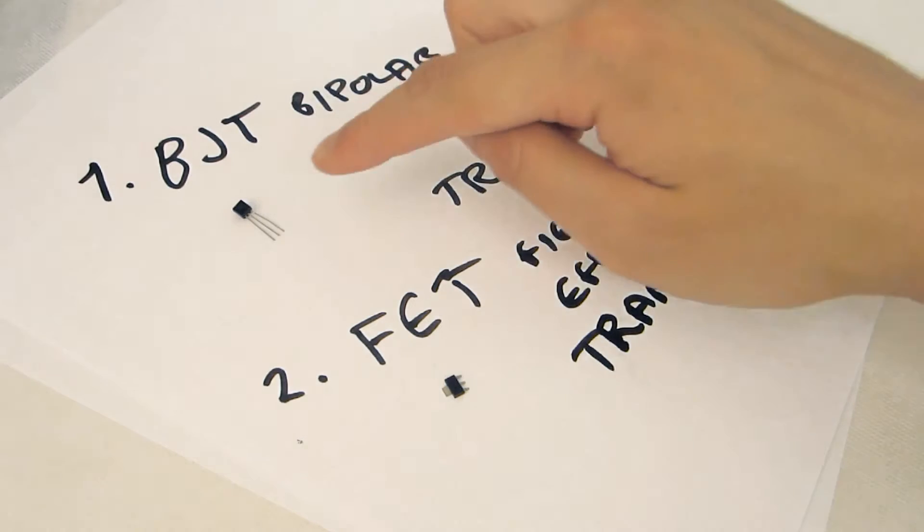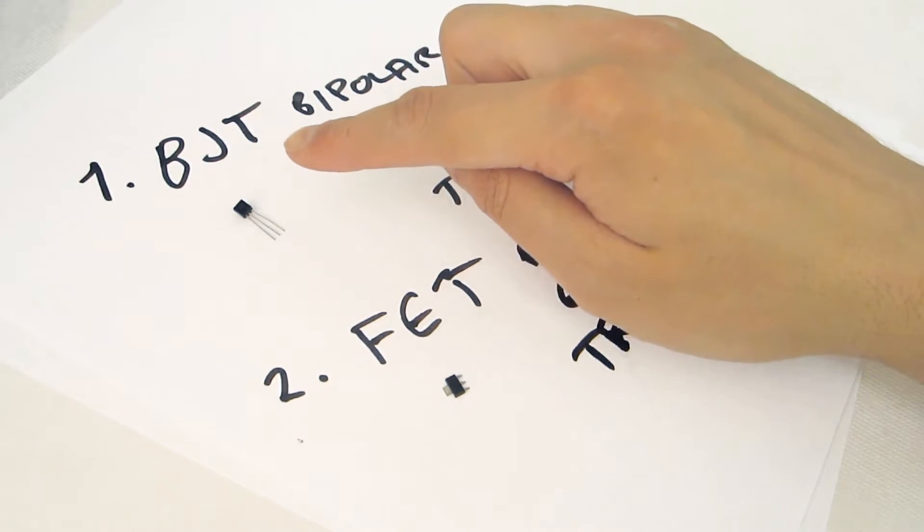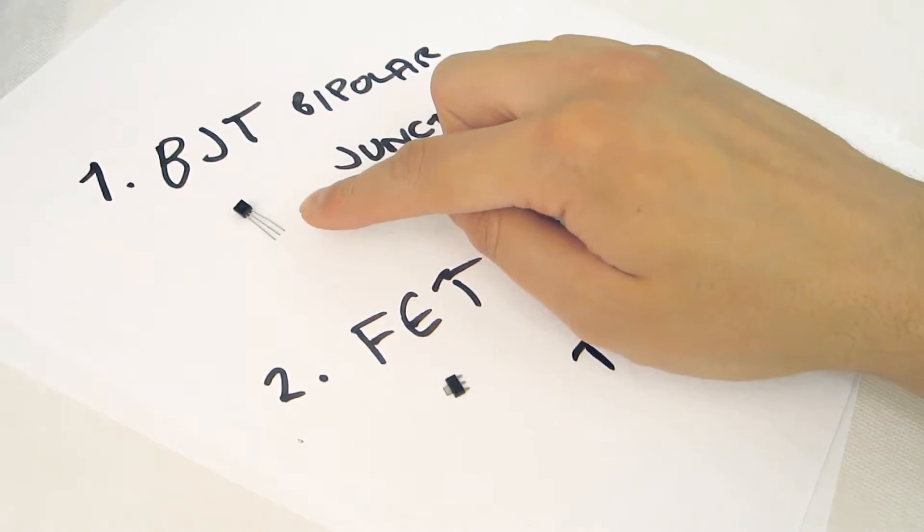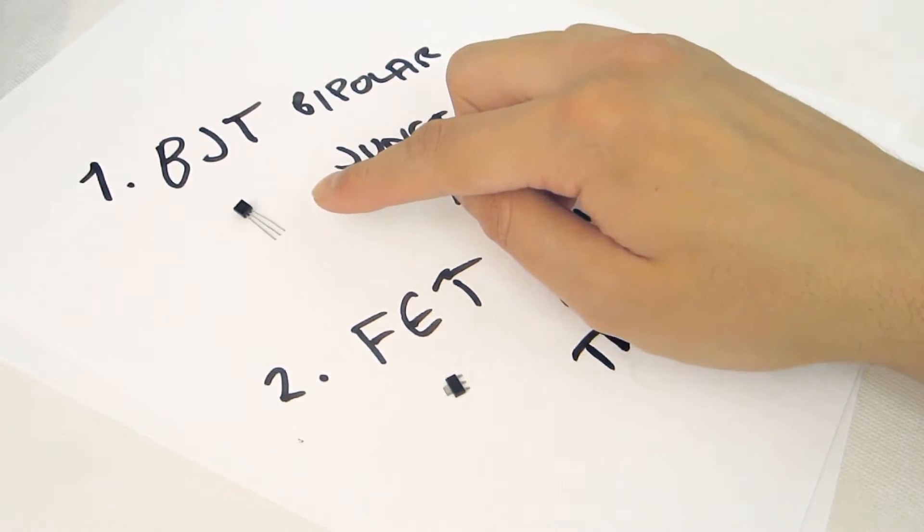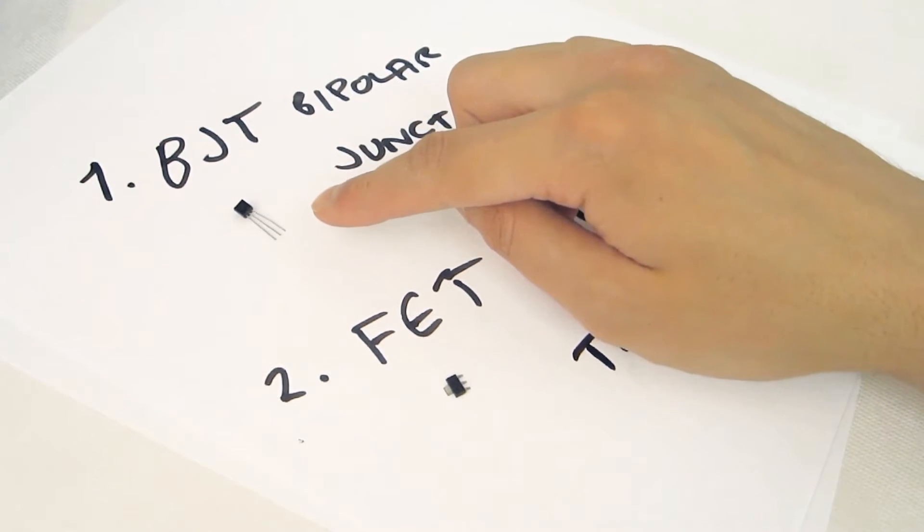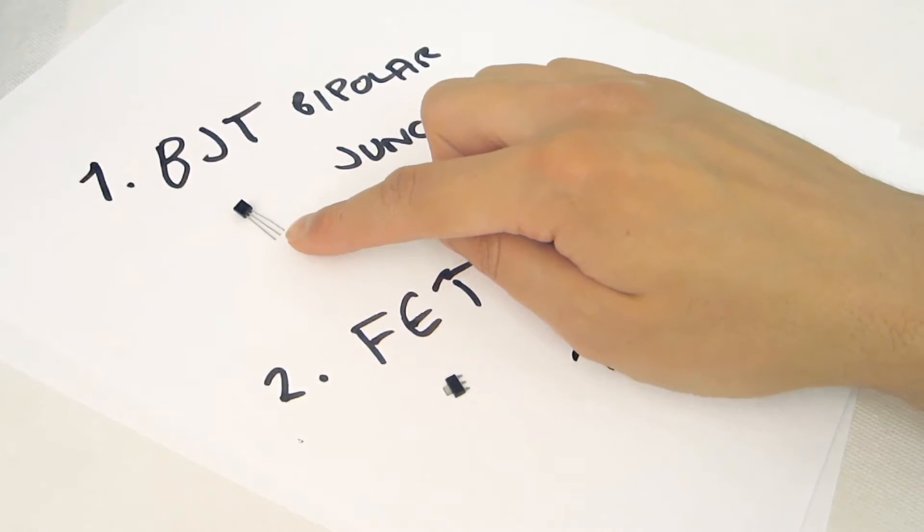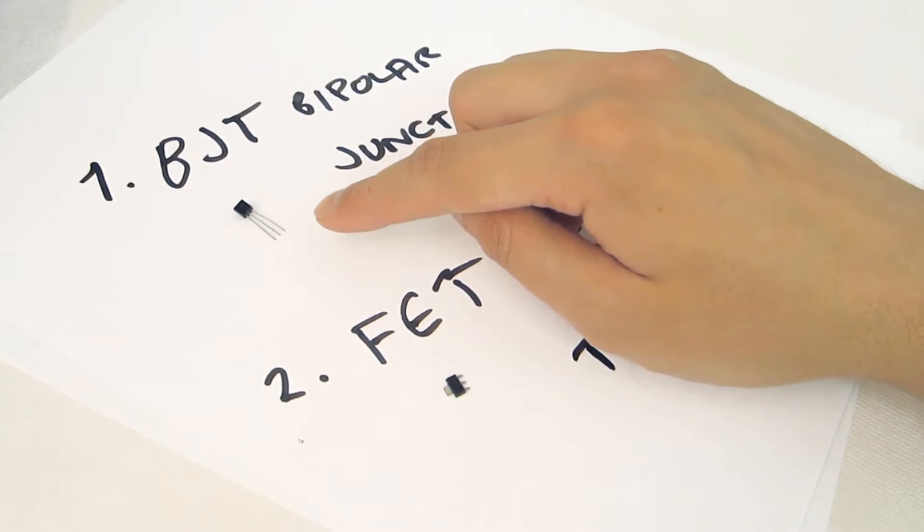Now BJTs have three terminals: the base, the collector, and the emitter. You'll need to go to Google to the data sheet to find out which leg or which terminal is which.